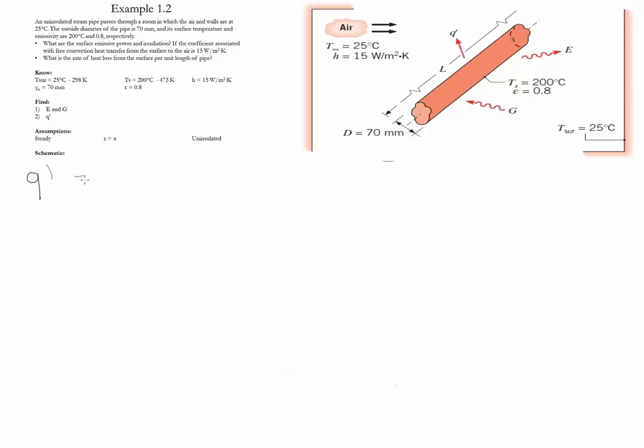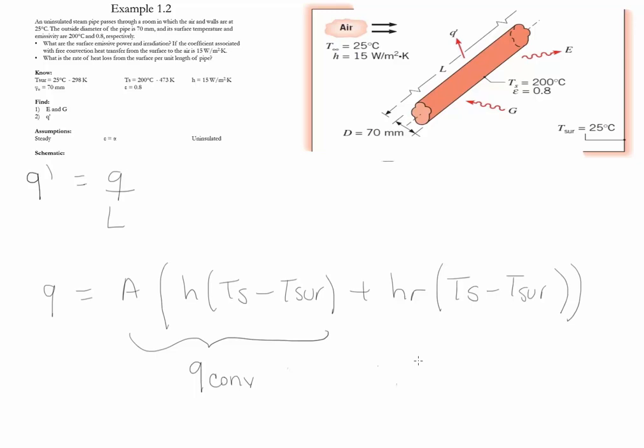Before we calculate Q', which is the value of heat divided by the length, the amount of heat is divided into two parts: a convection part and a radiation part. So notice once again, this is the amount of heat due to convection and this is the amount of heat that is due to radiation.